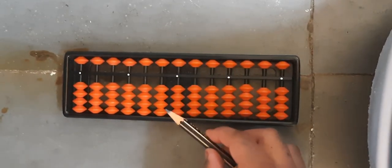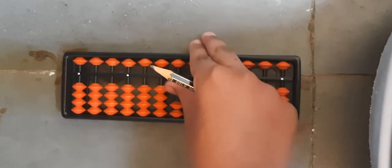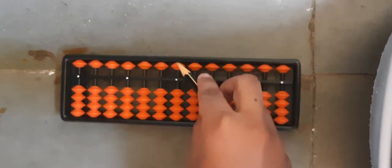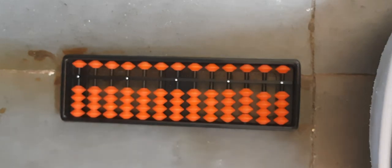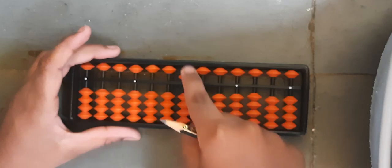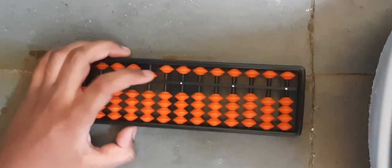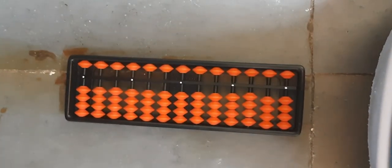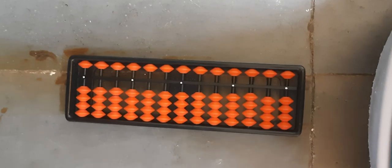Below the divider are just one, two, three, four and above the divider are beads that are multiples of five like five, fifty, five hundred, five thousand and so on.